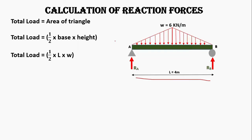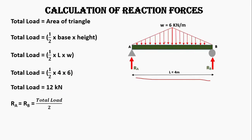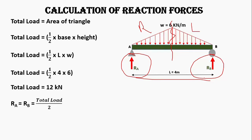The total load after calculation will be 12 kilonewtons. Since the beam is symmetrical — if we cut the beam into two halves, the right half and left half are both the same — the load will be equally divided into the two supports, RA and RB. So RA and RB would be equal, giving total load divided by 2, which equals 6 kilonewtons each.